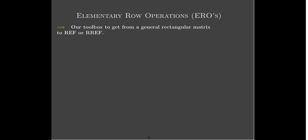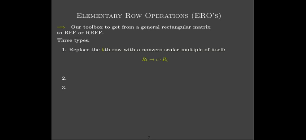So what is this systematic method? It relies on something called an elementary row operation — that is our toolbox. That is what we are going to use to go from a general rectangular matrix to a matrix in row echelon form. And there are three types of elementary row operations. The first type is to replace one of the rows with a scalar multiple of itself: row k is replaced by a constant times row k, where of course the constant can't be zero.